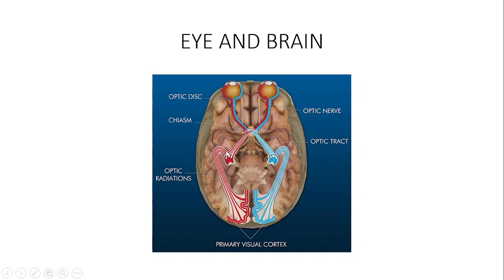In continuation you have the lateral geniculate nucleus, then the optic radiations. The superior optic radiations are found within the parietal lobe of the brain, and the inferior optic radiations are found in the temporal lobe. In continuation of the optic radiations is the primary visual cortex, which contains the macula with two major blood supplies. Optic nerve fibers are segregated into superior and inferior, meaning optic nerve problems always respect the horizontal meridian.